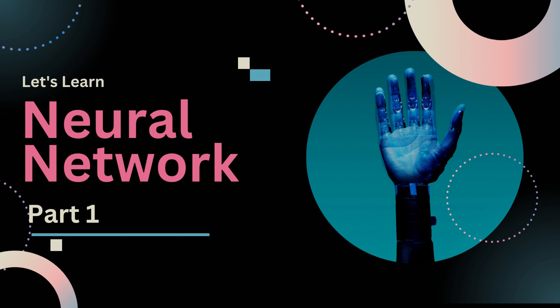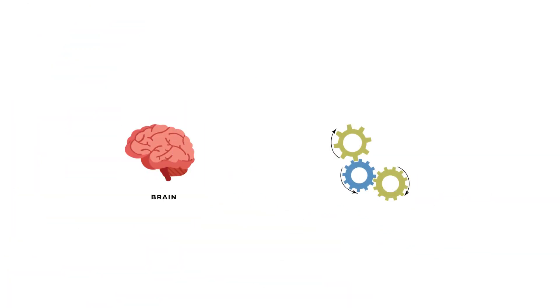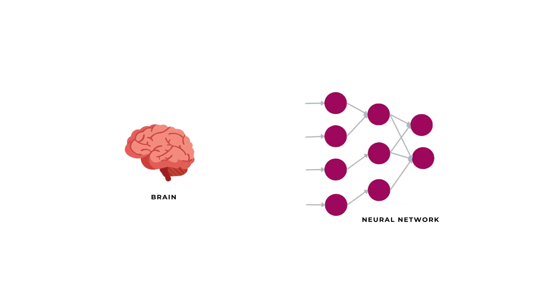Today, we will understand the working of neural networks, its advantages and disadvantages. Imagine having a machine that can think and learn like the human brain — that's exactly what neural networks do. These algorithms take inspiration from our brain structure and function to tackle complex tasks.